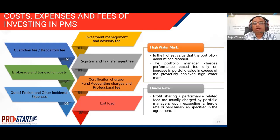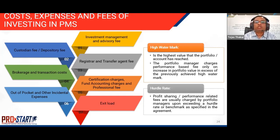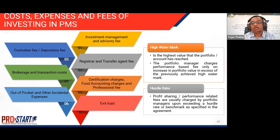There are two more important concepts: the high watermark and the hurdle rate. These are particularly relevant when a portfolio manager charges a performance-related fee. The high watermark is the highest value that the portfolio account has reached. The portfolio manager charges performance-based fees only on the increase in the portfolio in excess of the previously achieved high watermark — so in years when portfolios recover after a downturn, the portfolio manager cannot charge performance fees on amounts already charged. The hurdle rate is the threshold: performance-related fees are usually charged only upon exceeding a hurdle rate or benchmark as specified in the agreement.